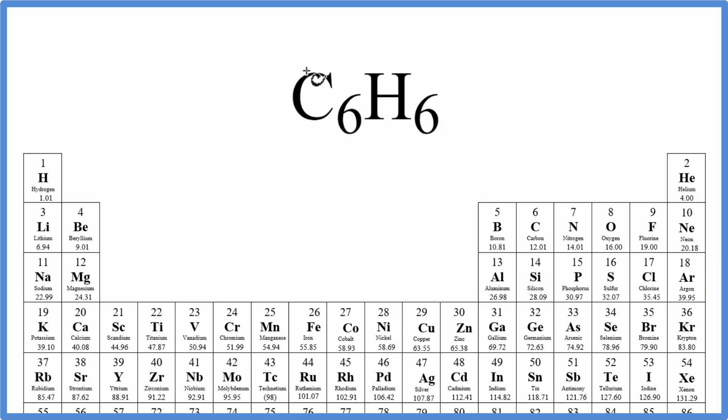We first go to the periodic table and we look up the atomic mass for each element. So carbon, that's 12.01 grams per mole. And I'll wait till the end of the calculation to write the units. Hydrogen, 1.01 grams per mole.